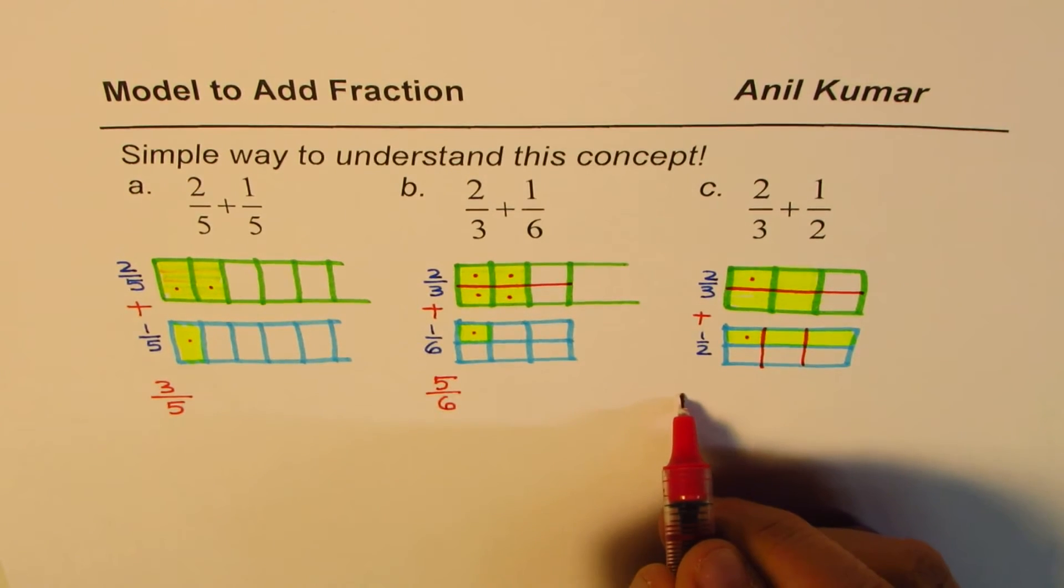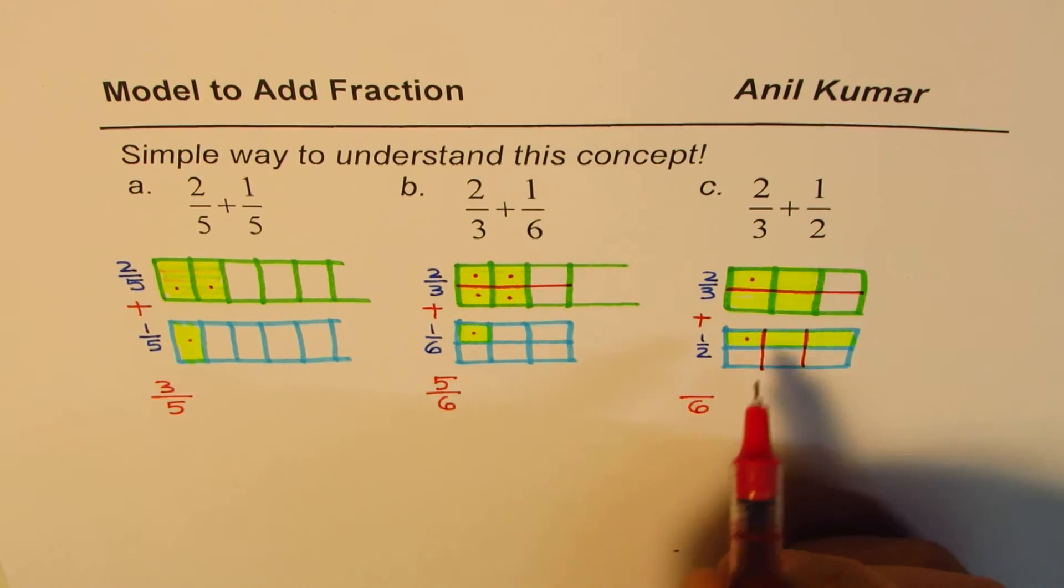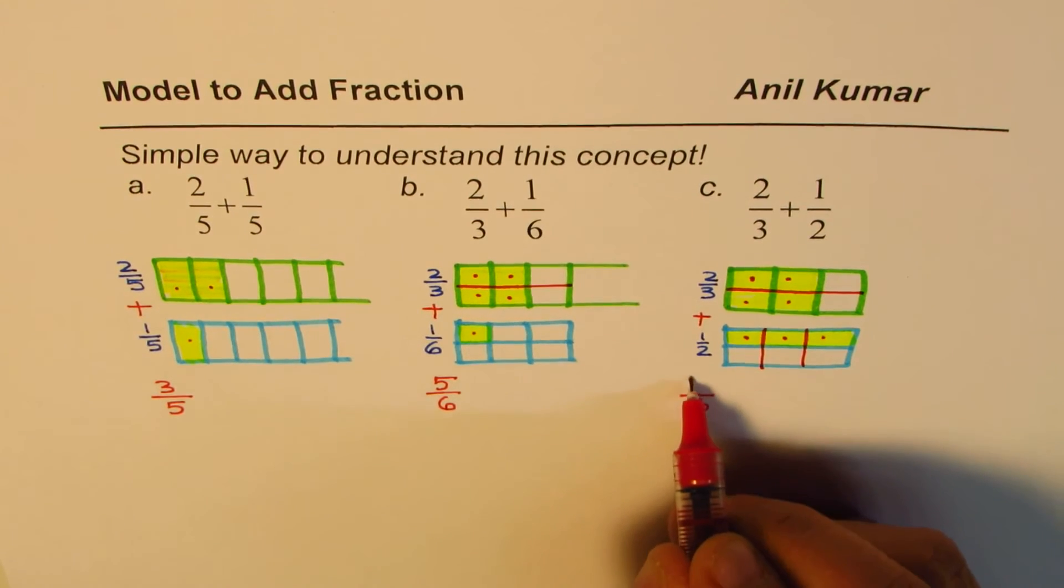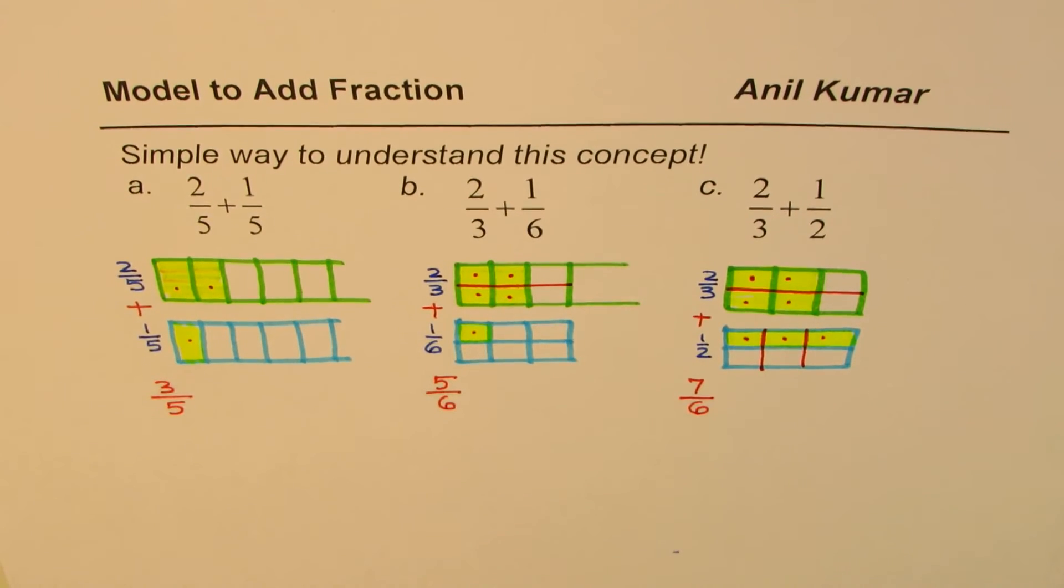How many 1 sixths are highlighted? 1, 2, 3, 4, 5, 6, 7. So we get 7 out of 6 as our answer. Do you get it?